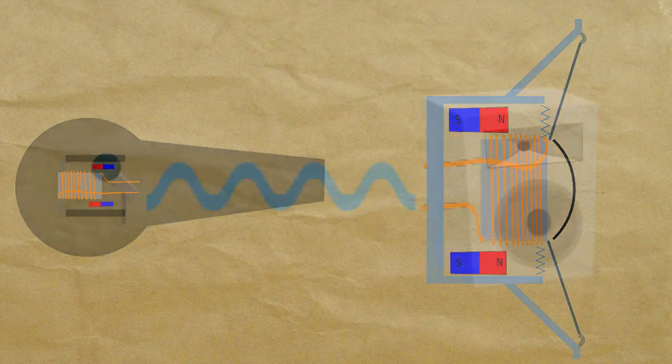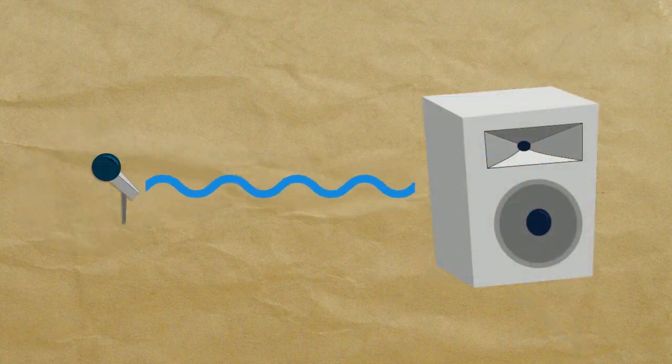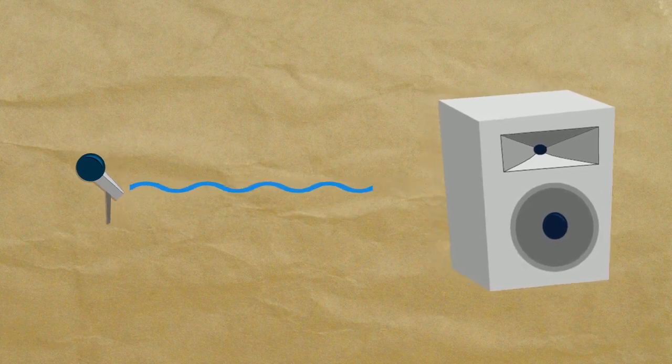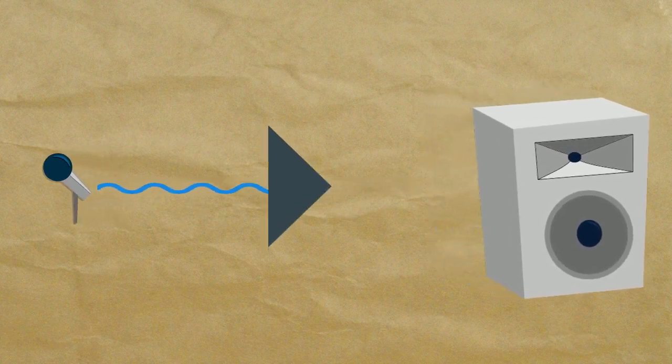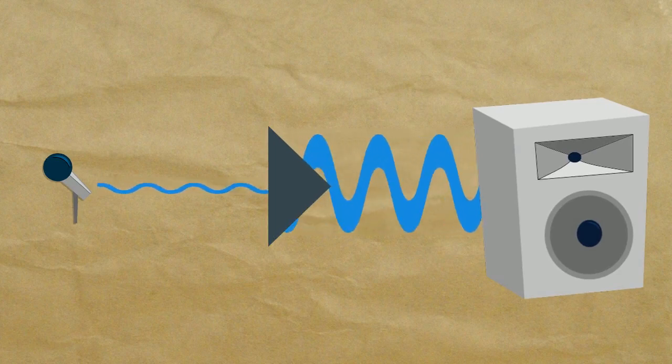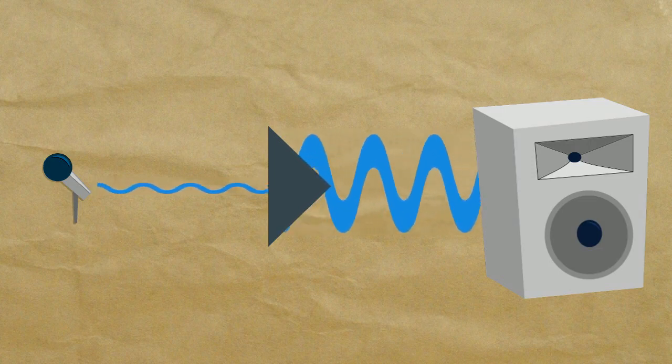This same inefficiency means that the output from a microphone is nowhere near enough to move a speaker coil. So between the microphone and the speaker you need an amplifier to make up for the inefficiency in the system, or to boost the signal so that the output of the speaker is louder than the original sound that was captured by the microphone, because that is kind of the point of all of this.